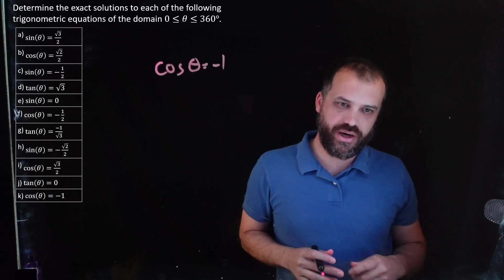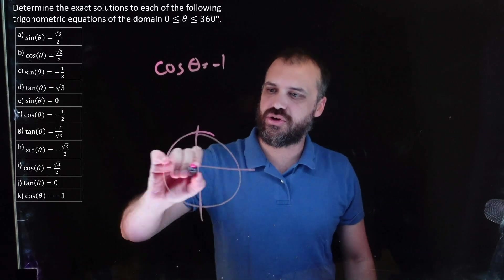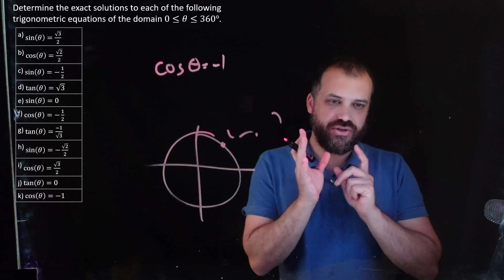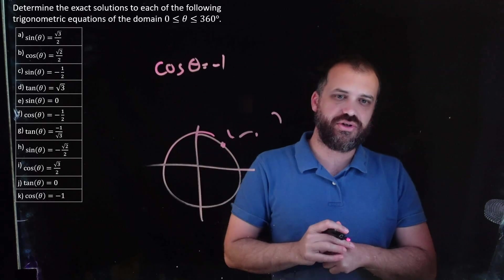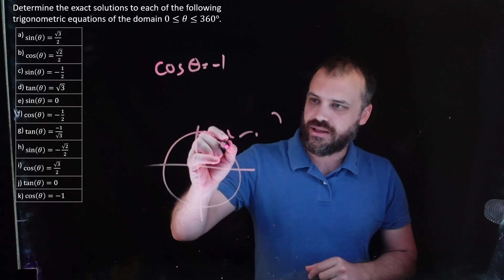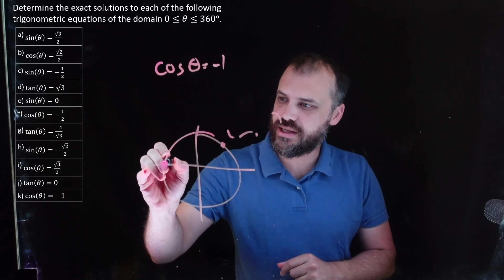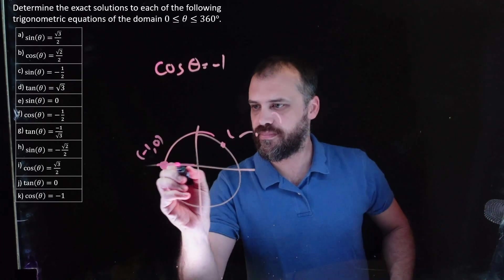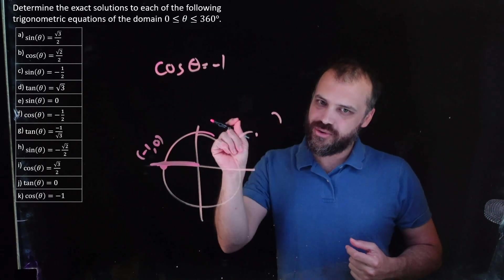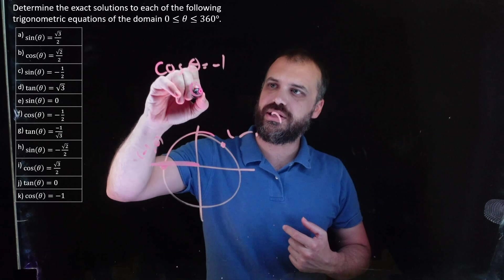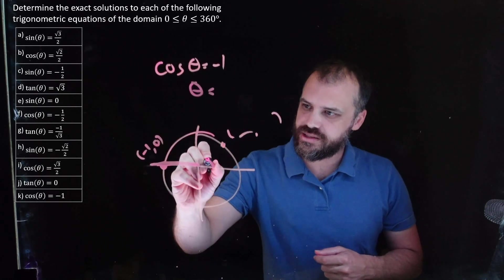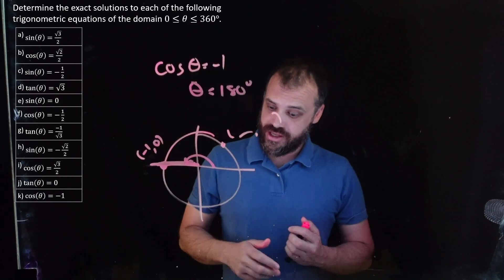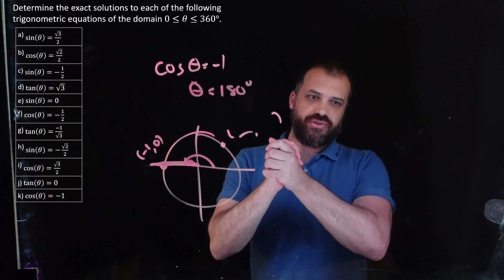Cos θ = -1. Draw a circle. Cosine is the x-coordinate of our dot. As we rotate the dot around the circle, where is the x-coordinate equal to negative one? The answer is here — the point (-1, 0) — and only there. Which means this is the only question in this whole list that has only one answer, and that one answer is 180 degrees. Sometimes we have two answers, sometimes three, this time just one.